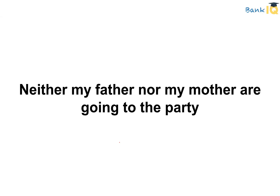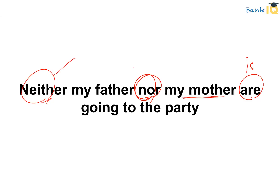For 'Neither my father nor my mother are going to the party' — again with the exclusive coordinator 'neither...nor,' the verb agrees with the nearest subject. The nearest subject is 'my mother,' which is singular. So we use a singular verb. The correct usage is: 'Neither my father nor my mother is going to the party.'